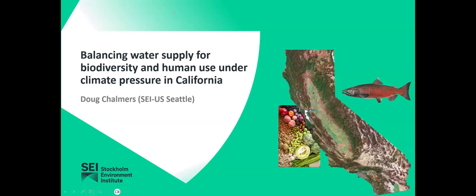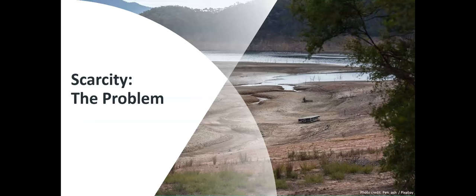Thanks everyone for joining. I'm Doug Chalmers here with SEI U.S. in Seattle, and I'm here to talk about balancing water supply for biodiversity and human use under climate pressure. We'll be focusing specifically on a case study in California. The underlying issue is water scarcity — with all these human uses of water and a growing global population, there's not enough water to go around in many arid and semi-arid areas for all the demands we place on water.